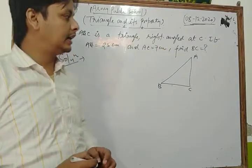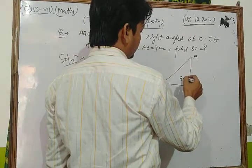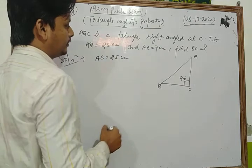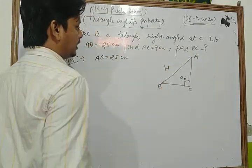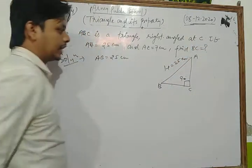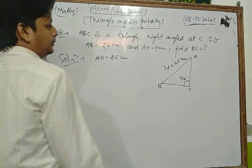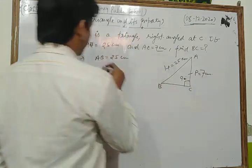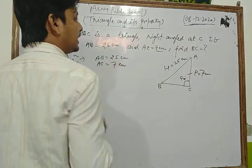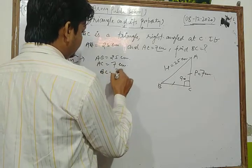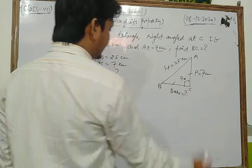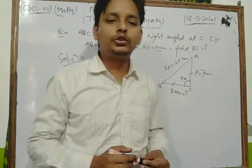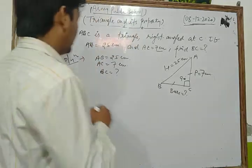In this triangle, AB is the hypotenuse equal to 25 centimeters, AC is the perpendicular equal to 7 centimeters, and we need to find BC which is the base. We will solve this using the Pythagoras property.